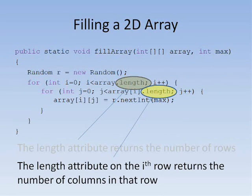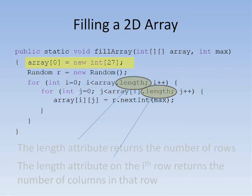Although generally Java programmers create two-dimensional arrays where every row is the same length, the language does not require this. Adding this line of code at the beginning of the method would replace the first row with a row of length 27.